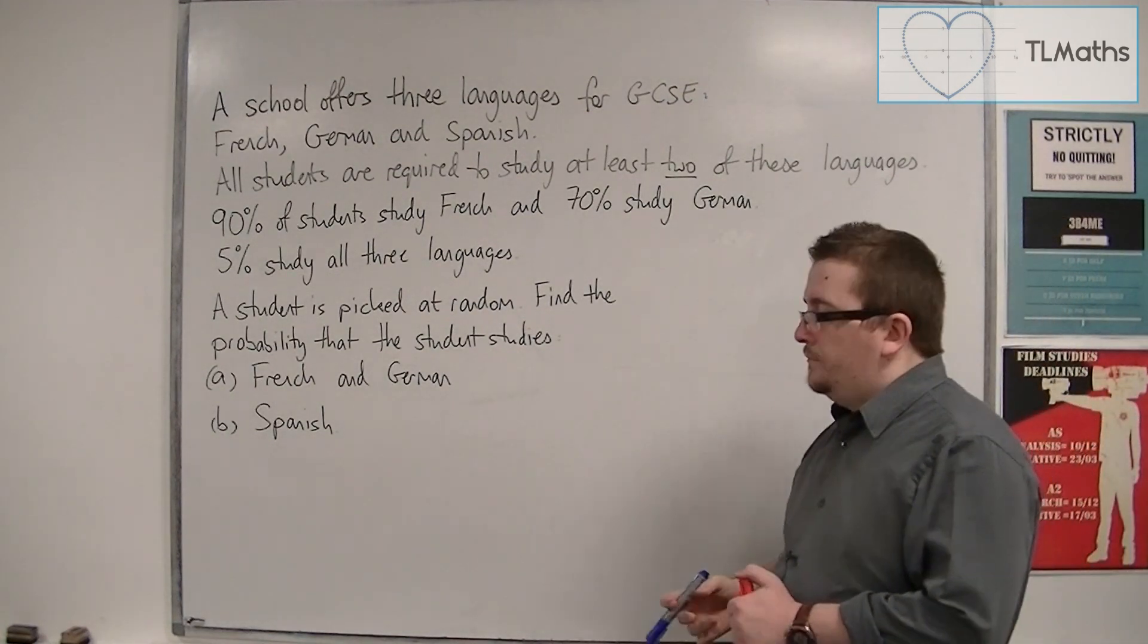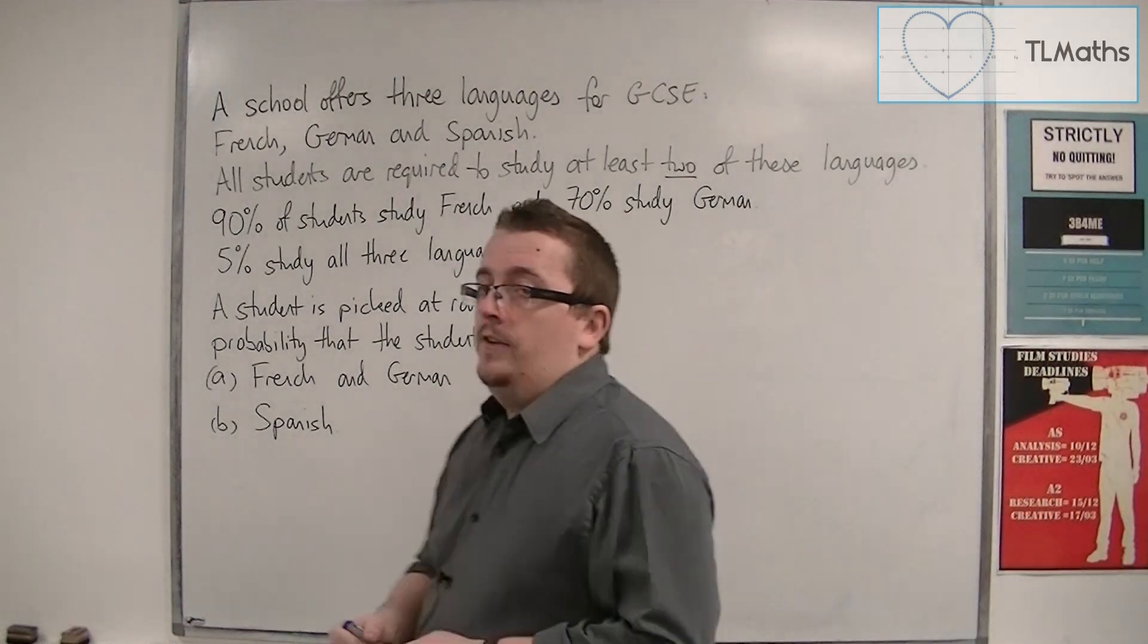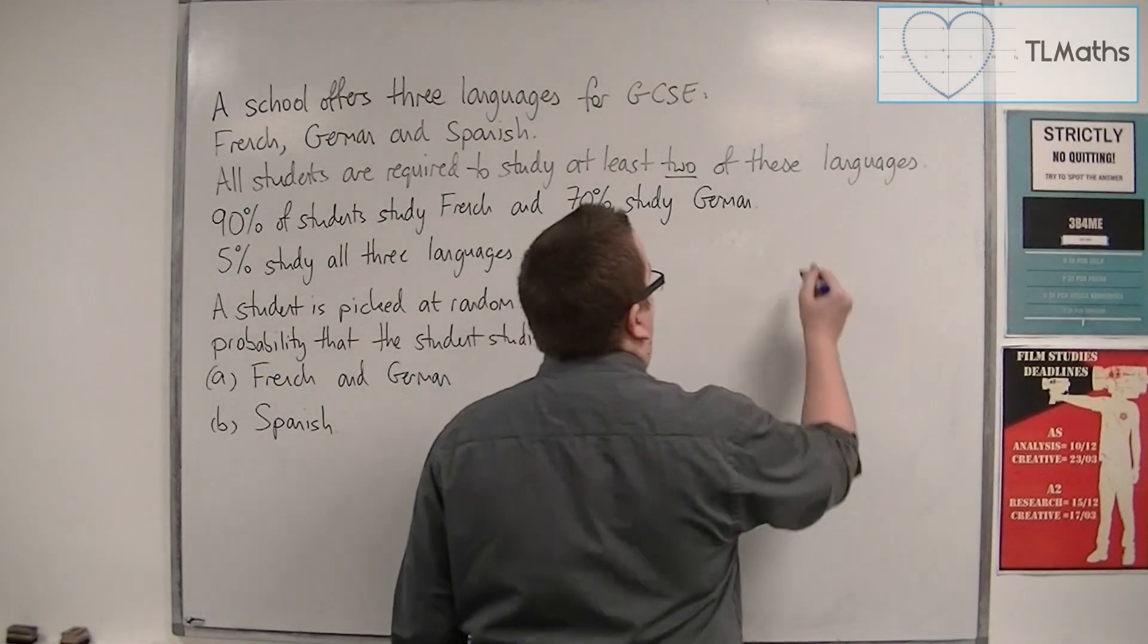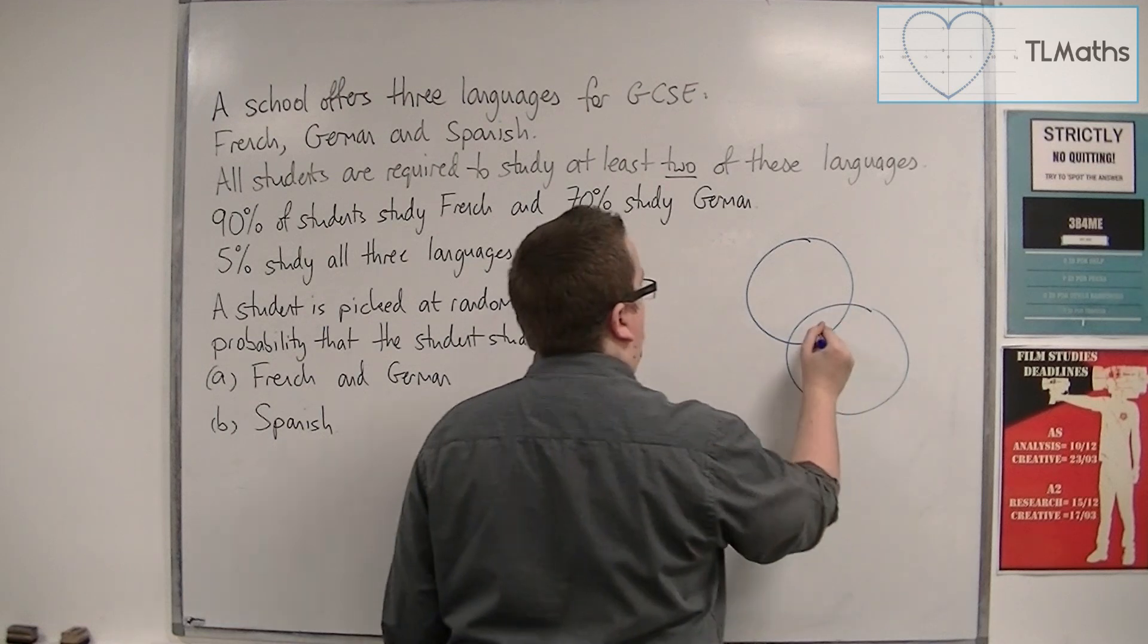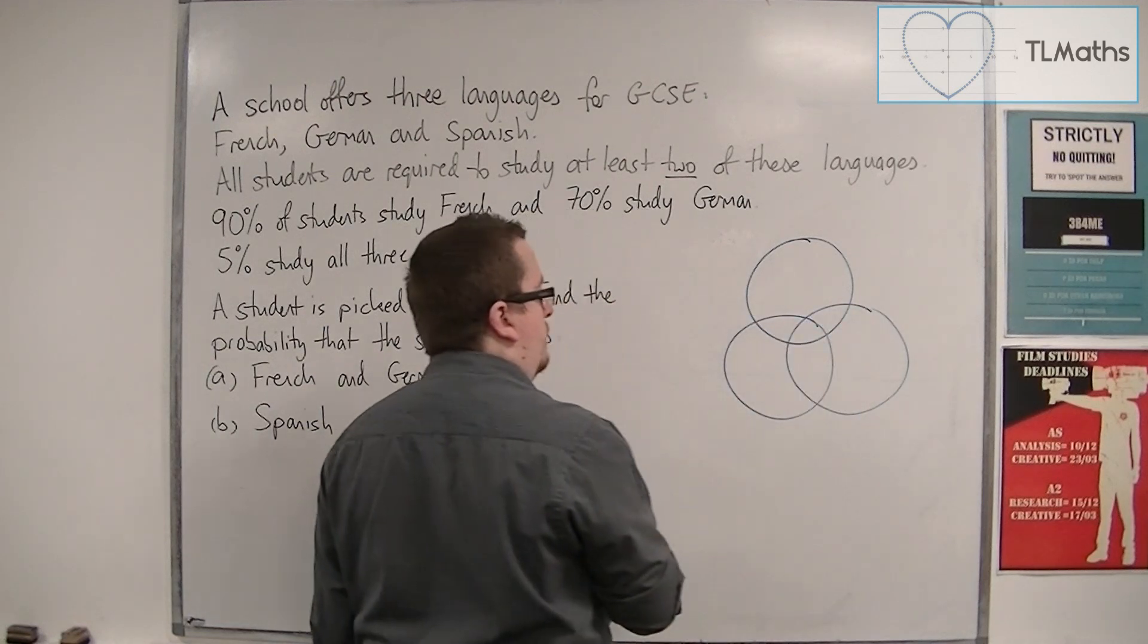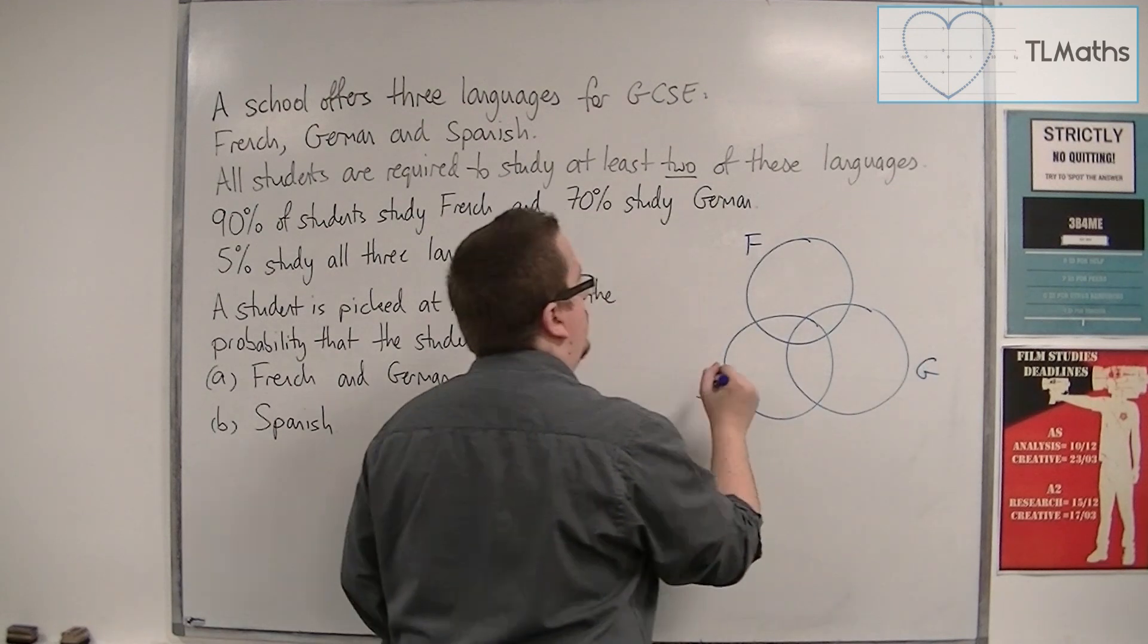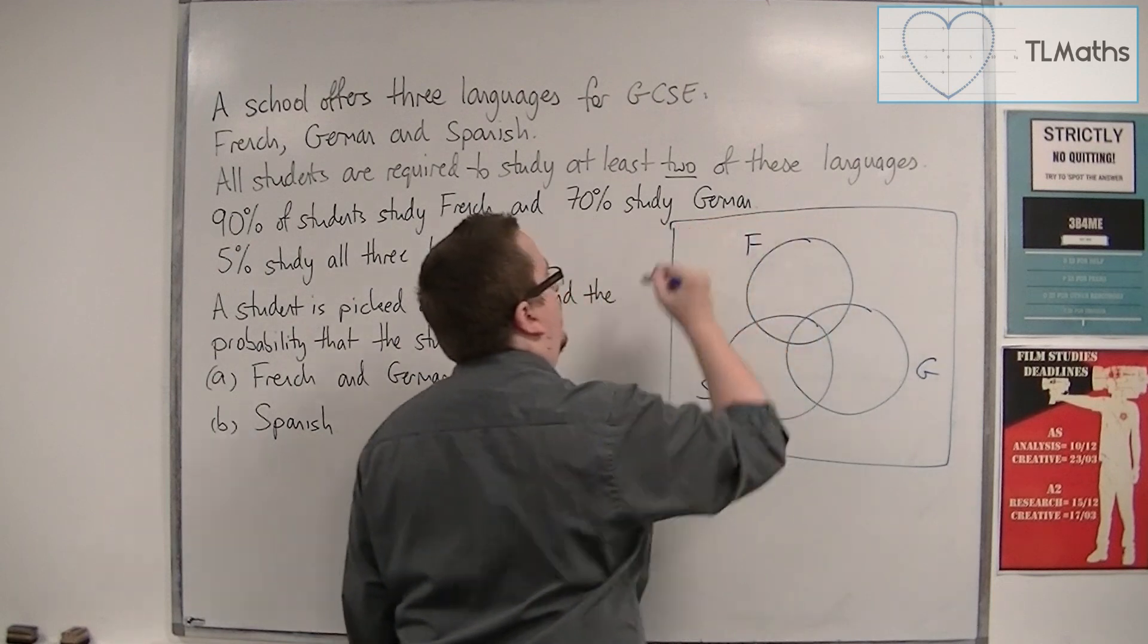So in this situation we actually have three circles for our Venn Diagram. We have French, German and Spanish. Okay, so French, German, Spanish, and we've got a box around the outside.